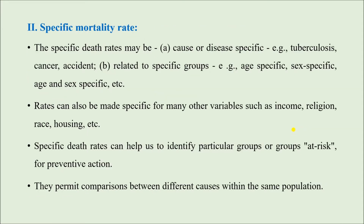Coming to Specific Mortality Rate — here, death rates due to specific reasons are calculated. For example, it can be disease-specific death rates like tuberculosis, cancer, or accident, or it can be specific to particular groups like age-specific, gender-specific, or age-and-gender-specific, where both age and gender are considered together.